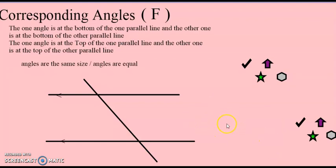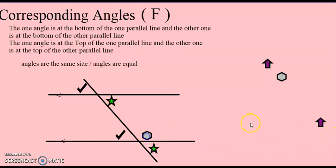As an experiment, press pause and tell me how many sets of corresponding angles you can find. Okay — that angle and that angle are corresponding angles, do you see the F? That angle and that angle are corresponding angles. This angle and that angle will be equal — do you notice the F? And last but not least, that angle and that angle are equal. So there are four sets of corresponding angles. One angle is at the bottom of one parallel line and the other at the bottom of the other parallel line, but on the same side of the transverse line.